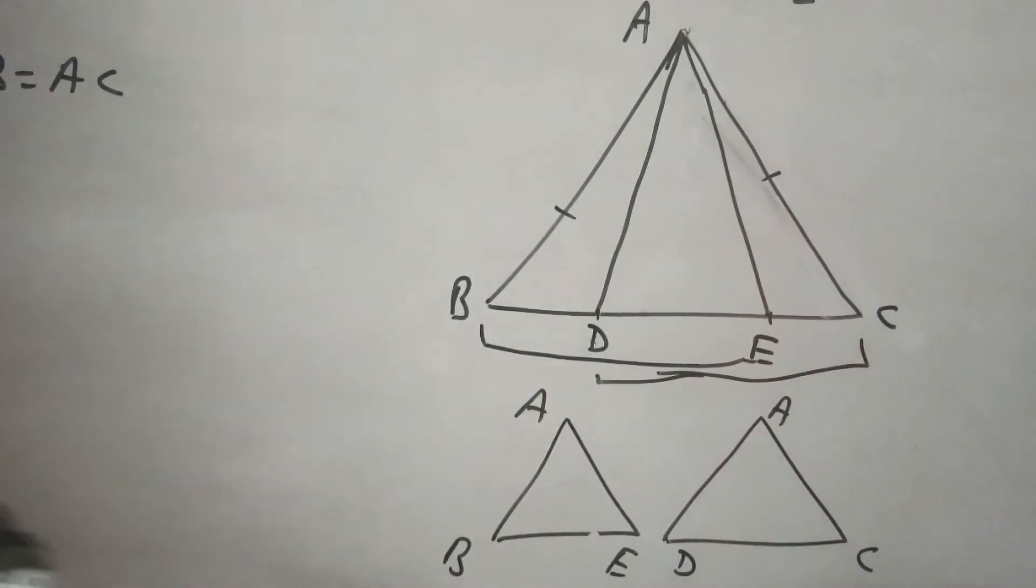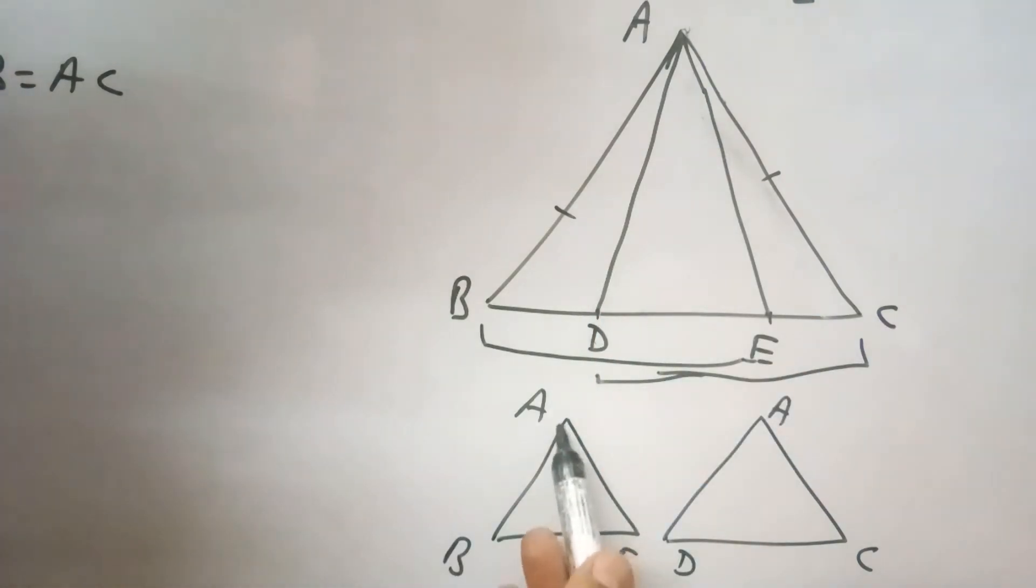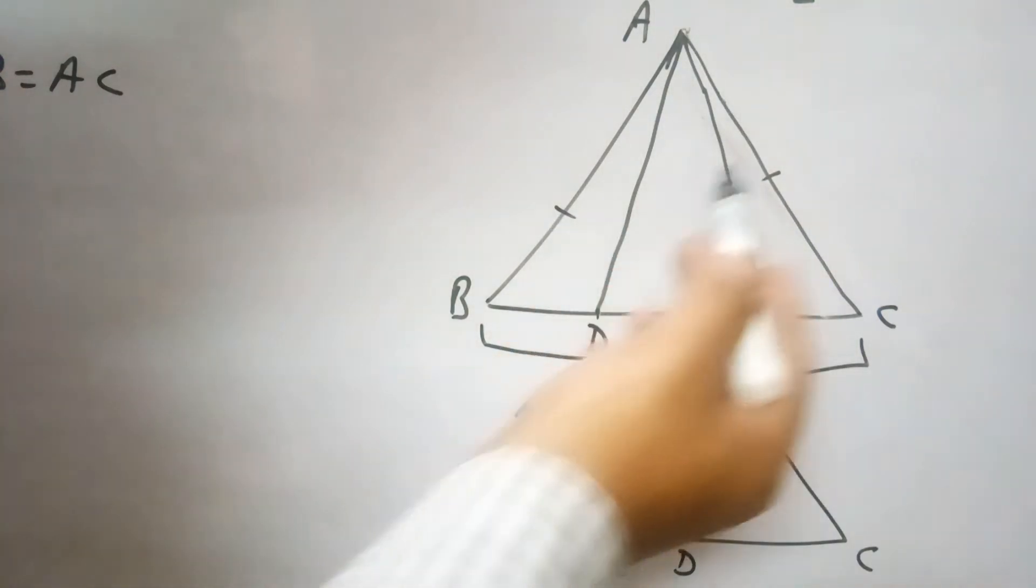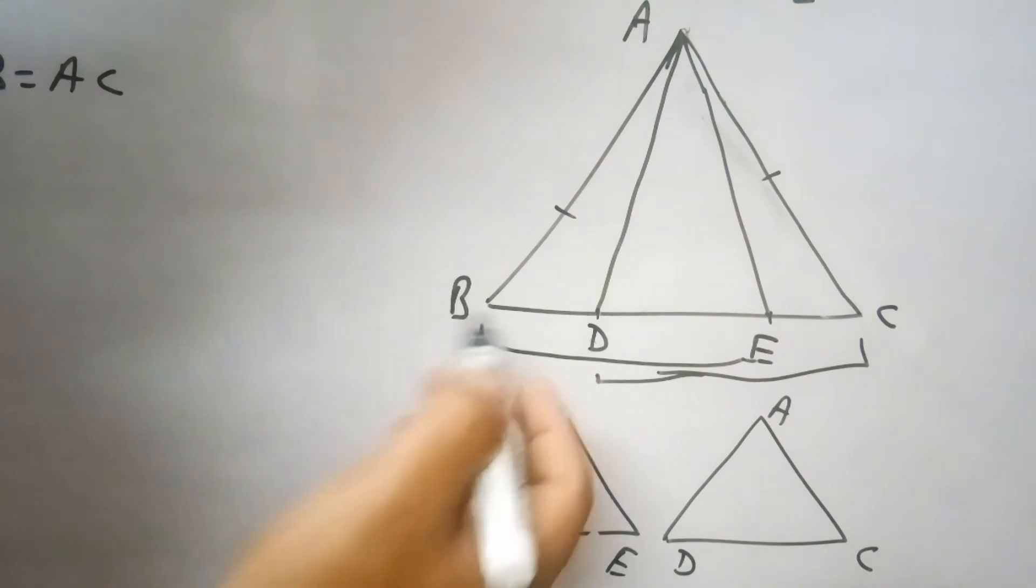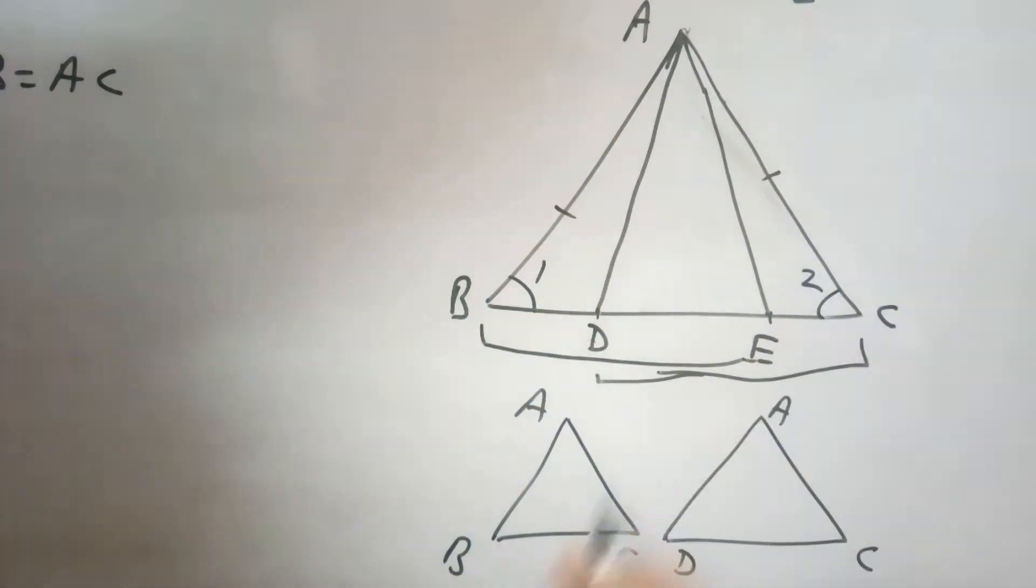So let me explain with the diagram first. I have taken triangles ABE and ADC because AB and AC are equal in this isosceles triangle, so angle 1 will be equal to angle 2. So this is angle 1 and this is angle 2.